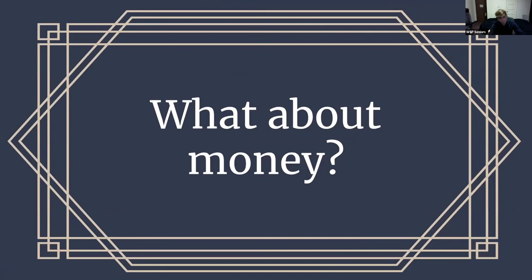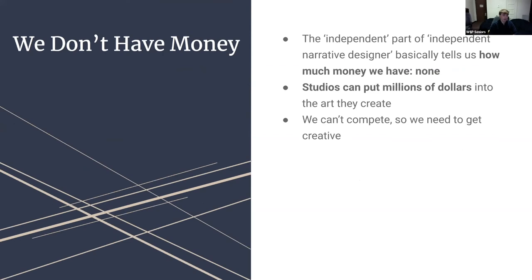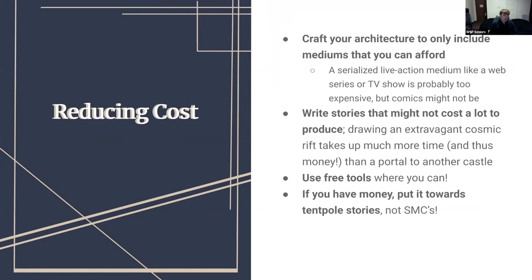What about money? Narrowing down the cost of any piece of art is extremely difficult, but in general, the more artistic skill or time it takes to create a work, the more expensive it's going to be. Comics are relatively cheap to make; films and video games are not. As an independent narrative designer, you basically have none. Studios can put millions of dollars into the art they create — a single person or small team just can't compete, so we need to get creative. You should craft your architecture to only include mediums you can afford. A serialized live-action medium like a web series is probably too expensive, but a comic might not be.